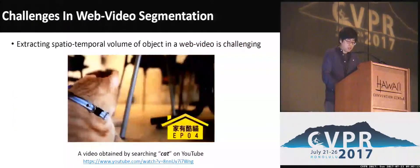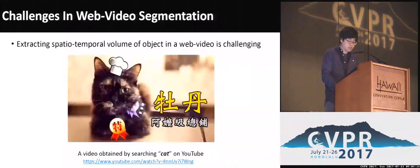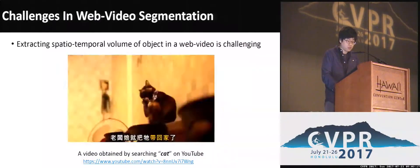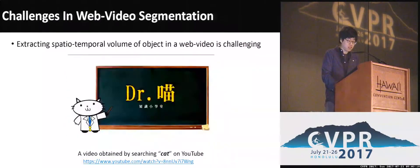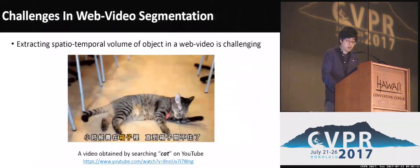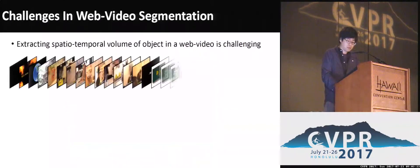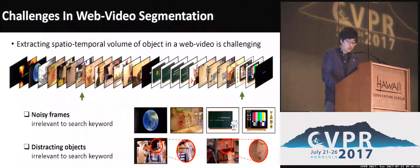However, extracting the spatial-temporal volume of an object from unconstrained video is also quite a challenging task. Here we present an example video obtained by searching 'cat' on YouTube. As you can see, web videos often contain many noisy frames and distractors irrelevant to the search keyword, which makes segmentation quite challenging.